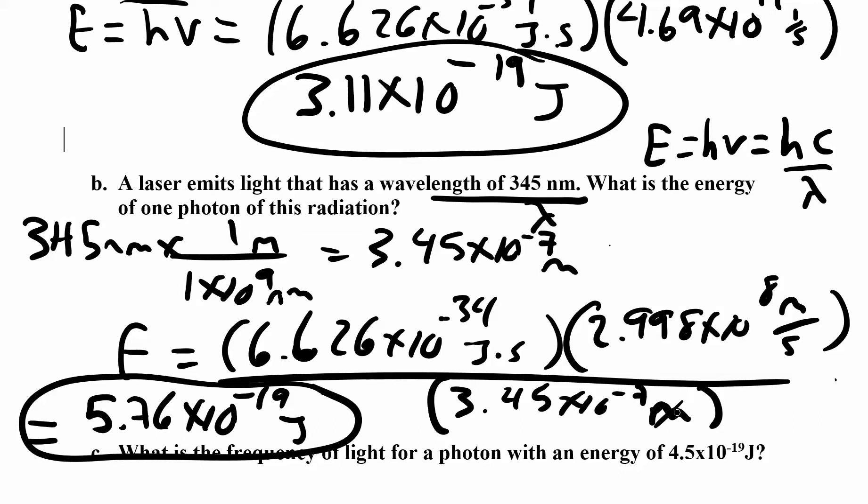Bottom in parentheses. Otherwise, it's going to do this times this and then divide it by 3.45. And then it's going to multiply your whole answer by times 10 to the negative 7. So make sure that's in parentheses if you're not doing it step by step.